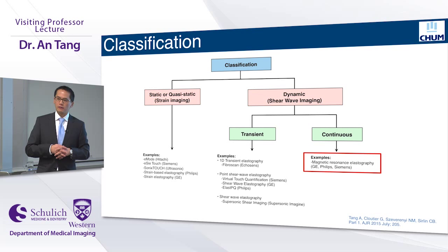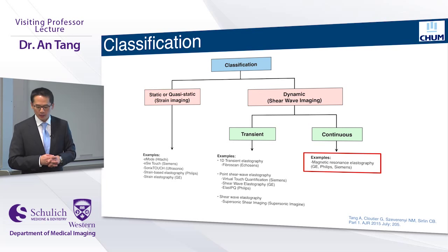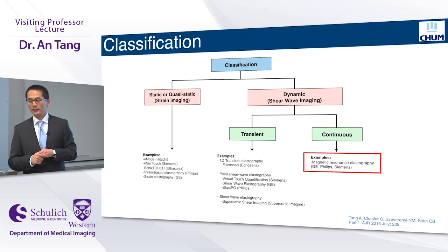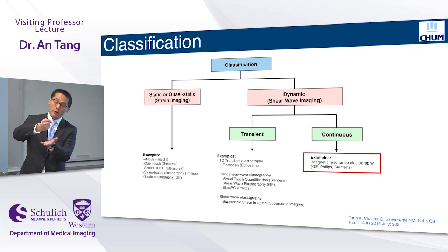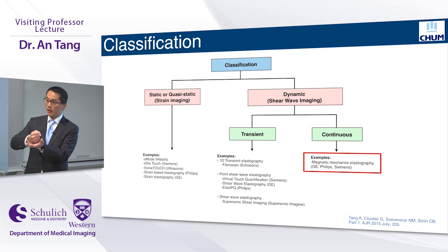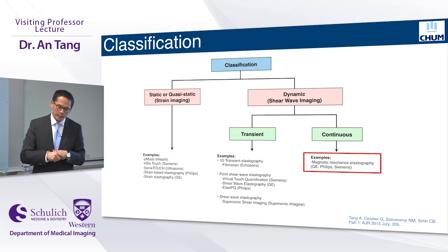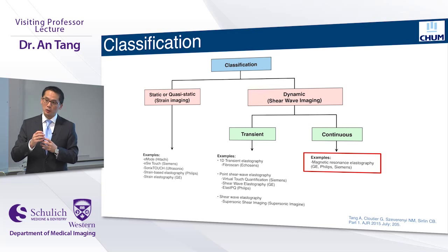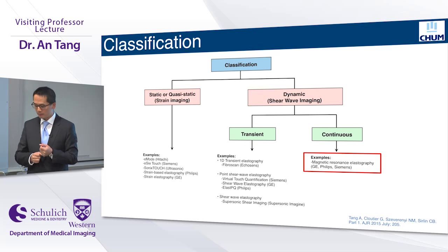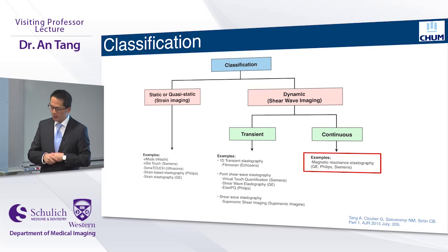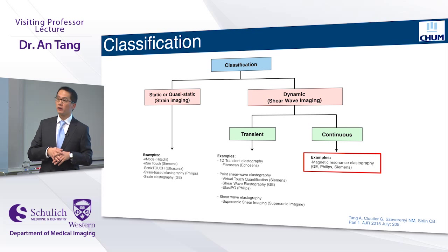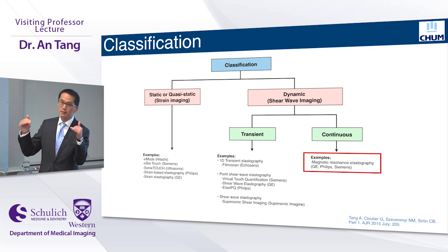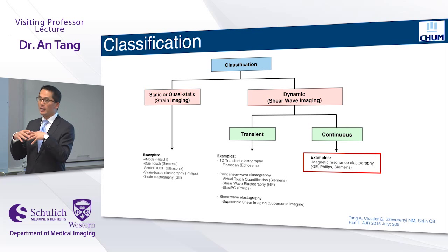This is the big picture of elastography as it stands today. On the left, you have static or quasi-static techniques, which require manual compression to evaluate stiffness — the rationale being that soft tissue tends to deform whereas stiff inclusions resist deformation. This is typically used in ultrasound. On the right, you have dynamic techniques, also known as shear wave imaging, which require the production of shear waves and measurement of shear wave speed inside tissues.